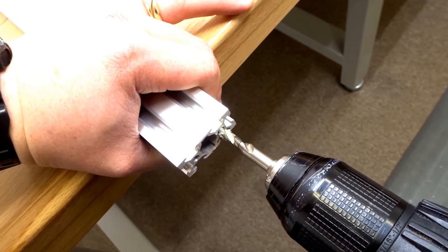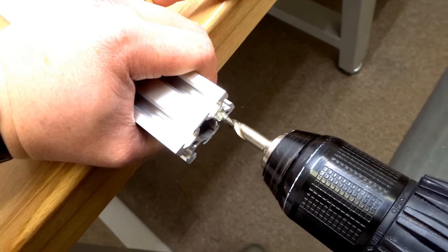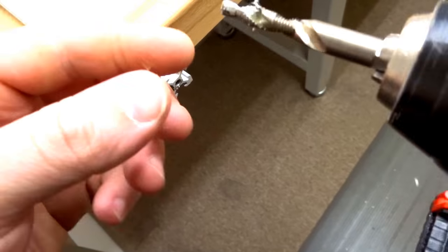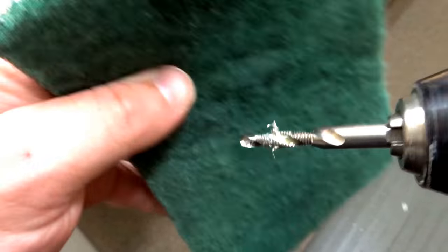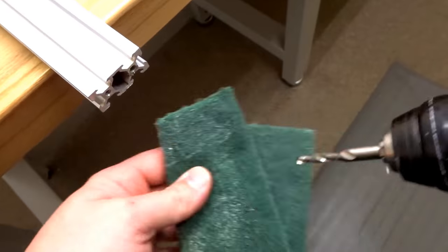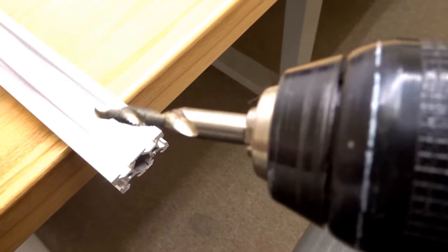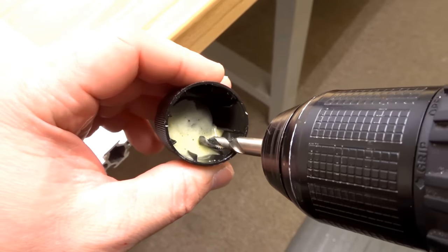Now you're going to see some metal shavings, so we're going to wipe that off with our rag. You can use a brush, toothbrush even, whatever you have available, and make sure to put some more oil on our tap.